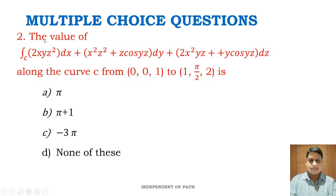Multiple choice question 2: the value of ∫_C 2xyz² dx + (x²z² + z cos yz) dy + (2x²yz + y cos yz) dz along C from (0, 0, 1) to (1, π/2, 2). Options: (a) π, (b) π + 1, (c) −3π, (d) none of these. The key answer is option B: π + 1.